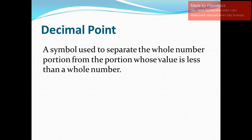Firstly, what is a decimal point? A decimal point is a symbol that is used to separate the whole number portion from the portion whose value is less than the whole number. In print, the decimal point appears like a period, or a dot, or a point, and it appears in the middle of the whole number and that portion whose value is less than one.